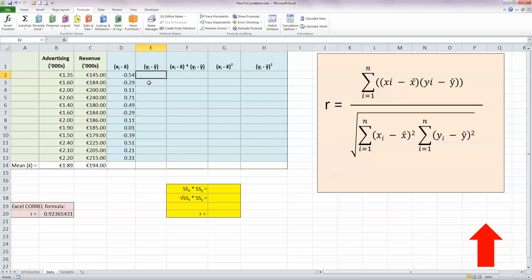Let's do the same for the Ys. So this is equal, this time my value for revenue minus the mean of Y. Press F4 to make that an absolute value and press enter. And once again, use Excel's autofill tool to copy this down for the other values.